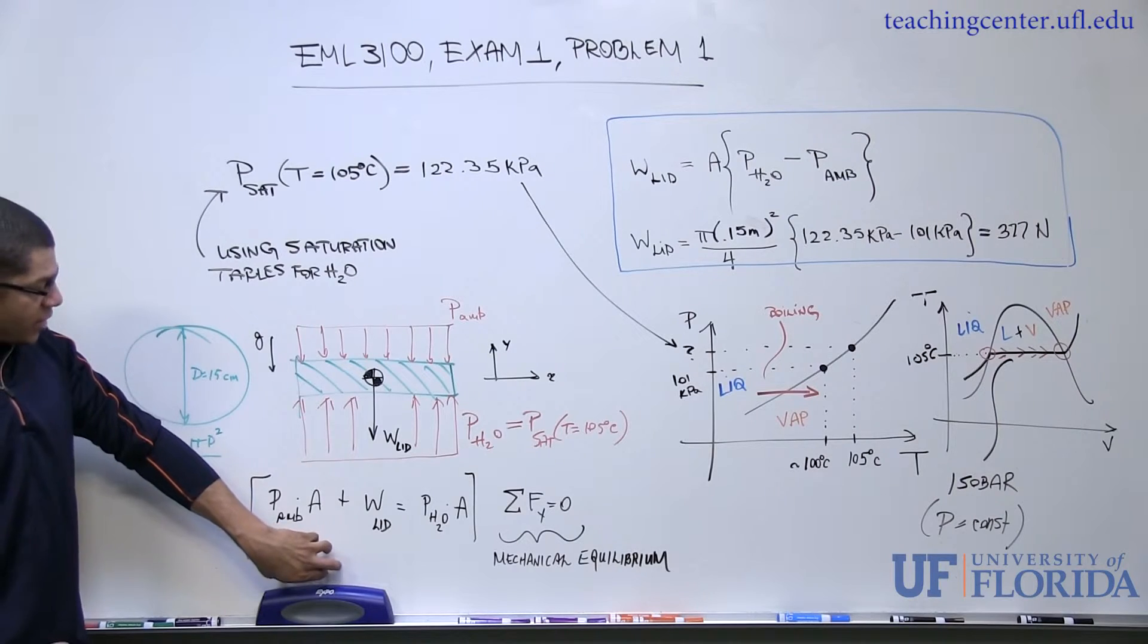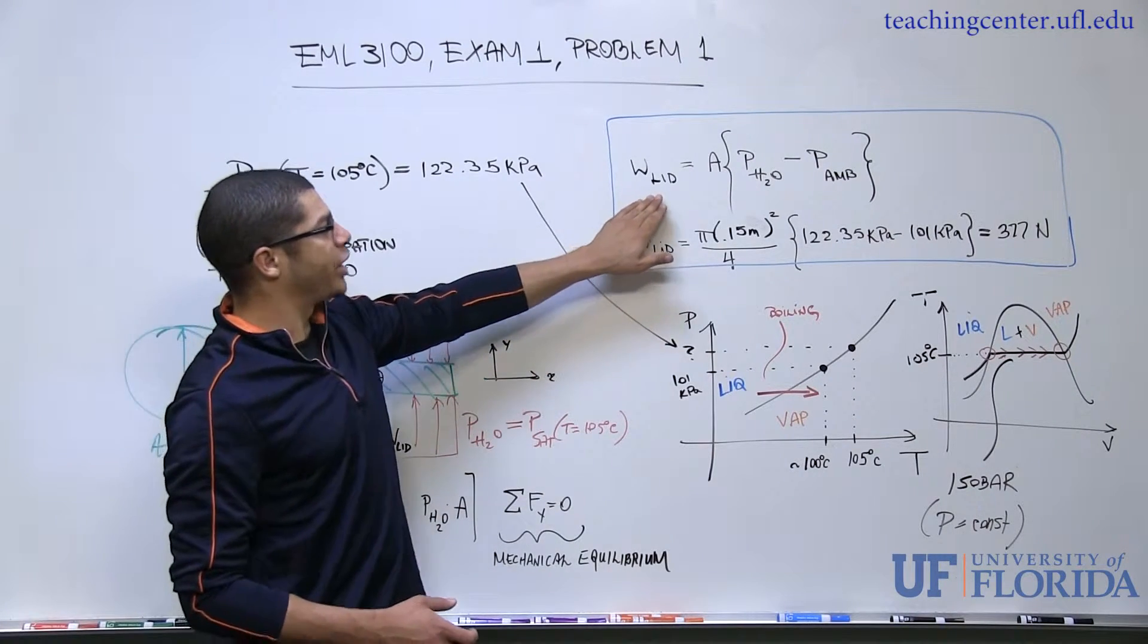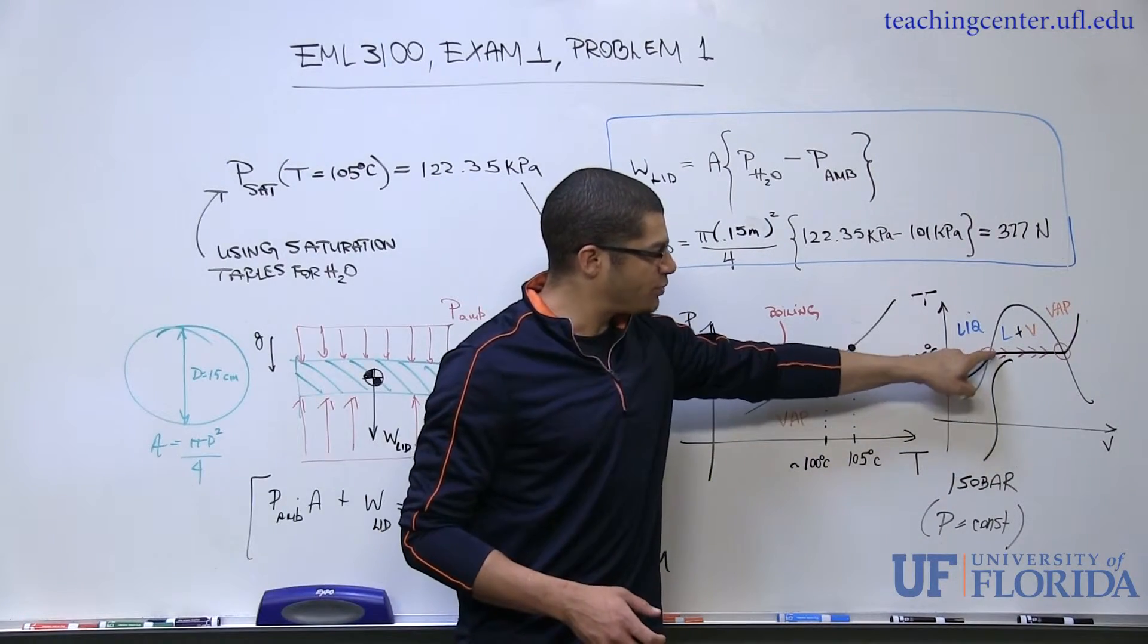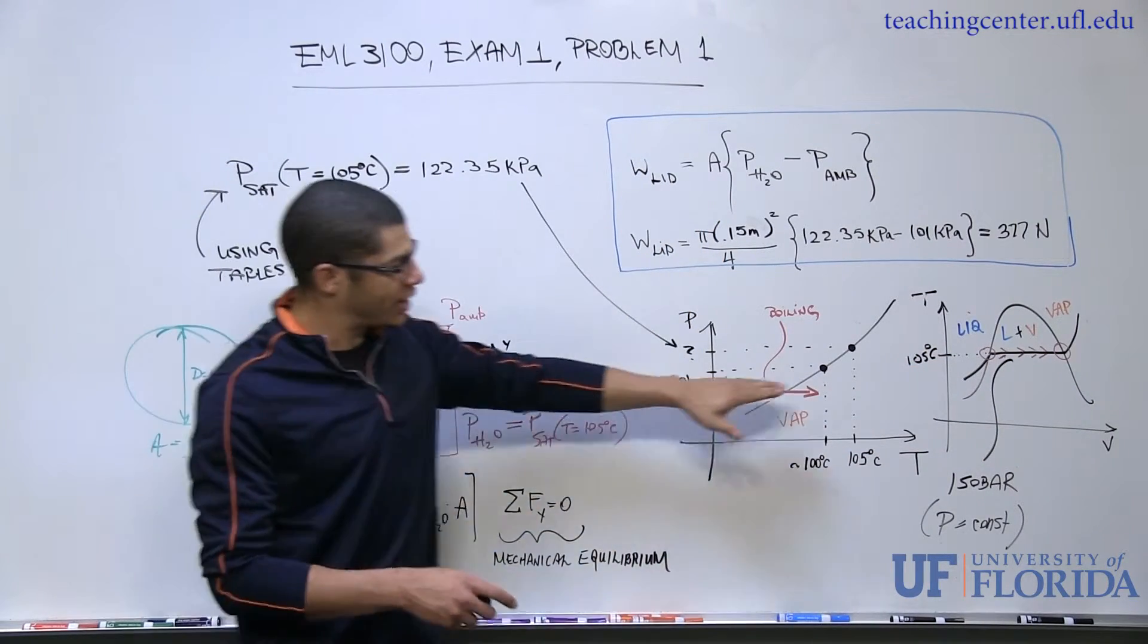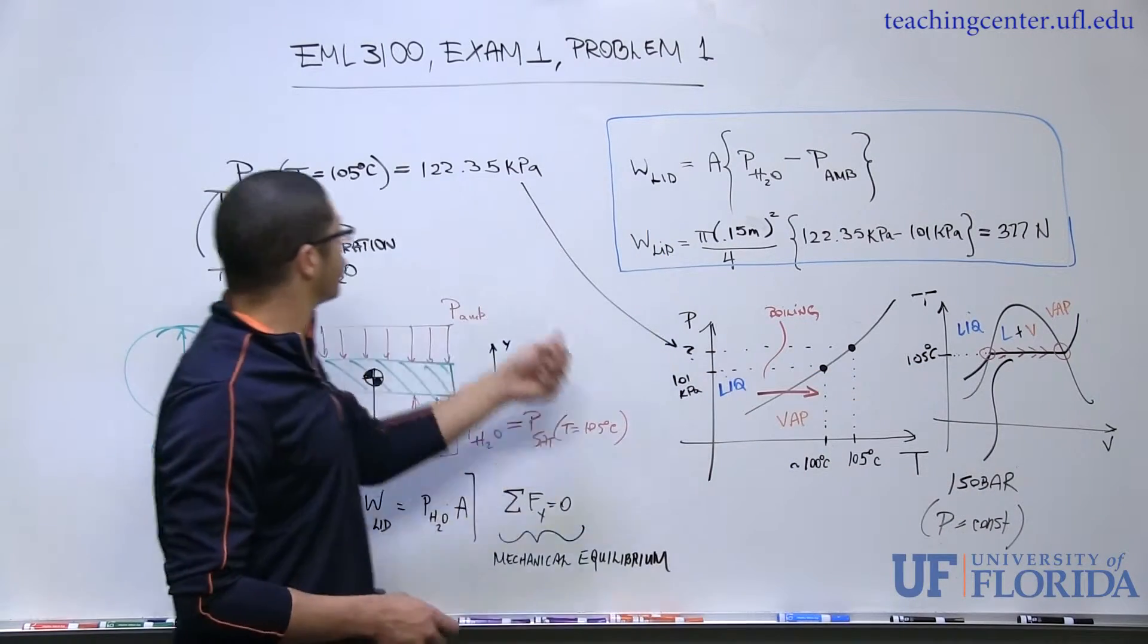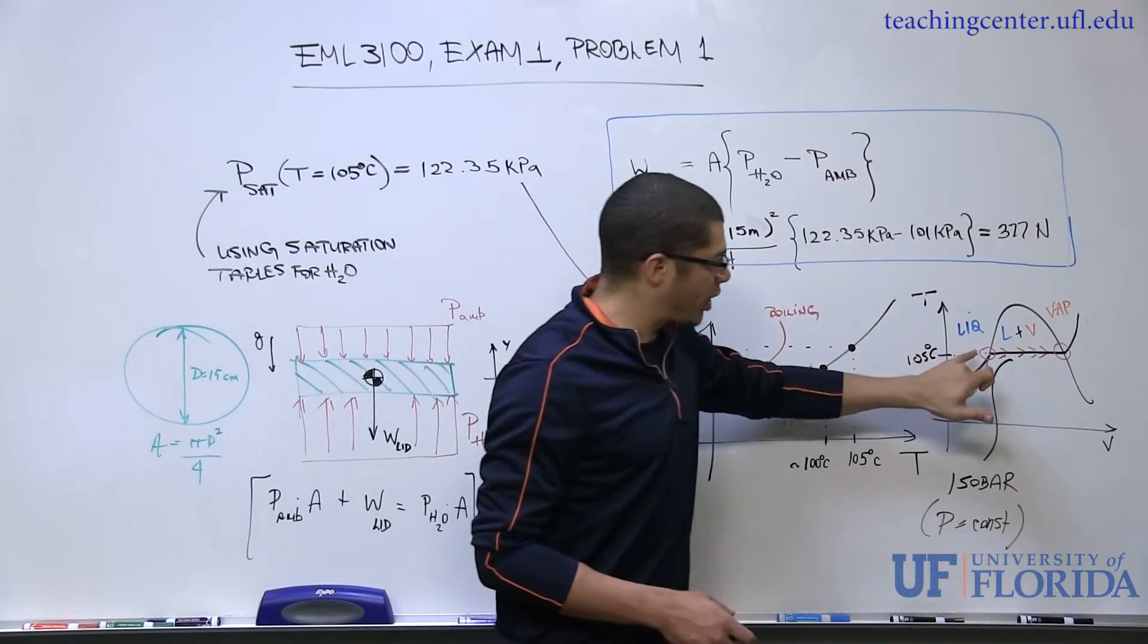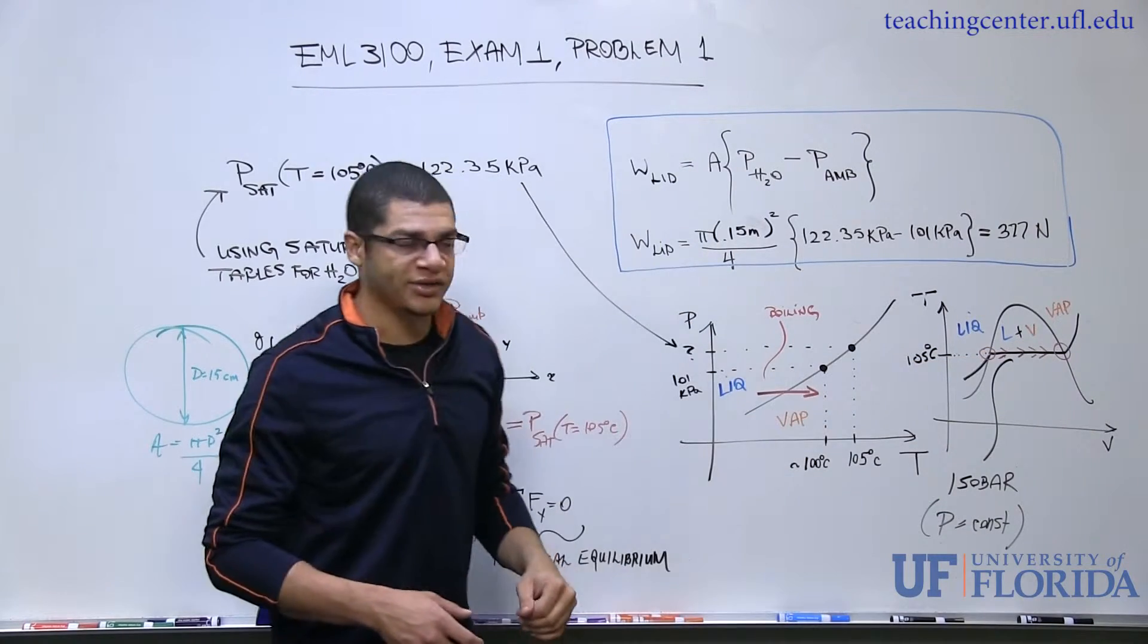From this equation we can manipulate it and solve for the weight of the lid required for mechanical equilibrium. And again, just to backtrack for a second, this would correspond to this point right here, either point, when we've got this given temperature, okay, during the boiling process, and the vapor pressure equal to 122.35 kPa. So this mechanical equilibrium constraint applies to any point along this line during the boiling process.